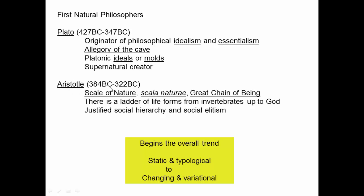Plato's student Aristotle spent more time thinking about nature and invented the concept of the Scale of Nature — Latin: scala naturae — also called the Great Chain of Being. Aristotle perceived a ladder of life forms, with invertebrates at the bottom, then progressively better animals, then humans, then angels, then God at the top. This was attractive because it justified social hierarchy: why are educated Greeks in charge? They're higher on the ladder. Why is it okay to have slaves? Slaves are a little lower on the ladder.